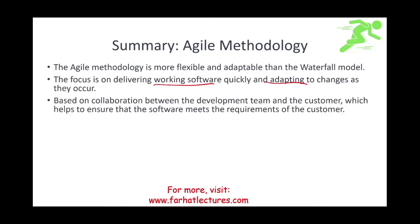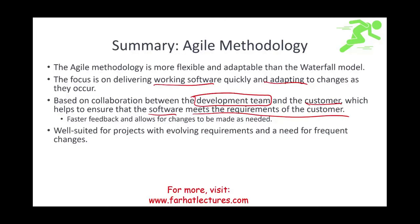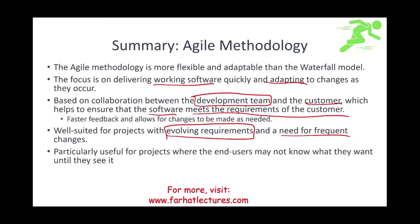The agile method is based on collaboration between the people developing the software and the customer, which helps ensure that the system meets the requirement of the customer. It allows for faster feedback and changes as needed. The agile method is well suited for projects with evolving requirements and a need for frequent change. It's particularly useful for projects where end users may not know what they want until they see it — requirements are not well-defined and the scope is likely to change.